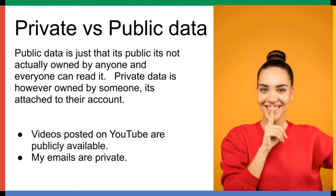In most cases you would be using an OAuth token, which would identify your application to Google. But when accessing public data, you don't need an OAuth token, so therefore we use an API key in order to identify our application when accessing public data.